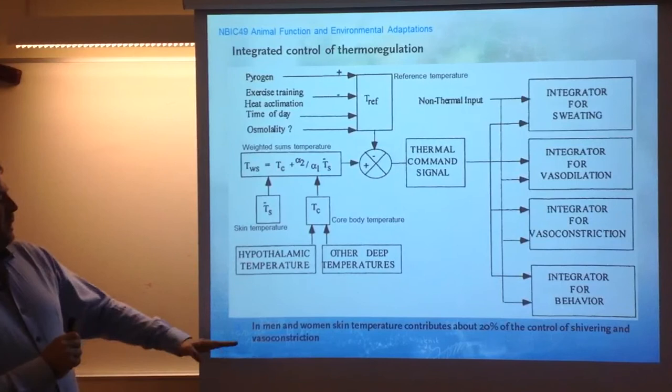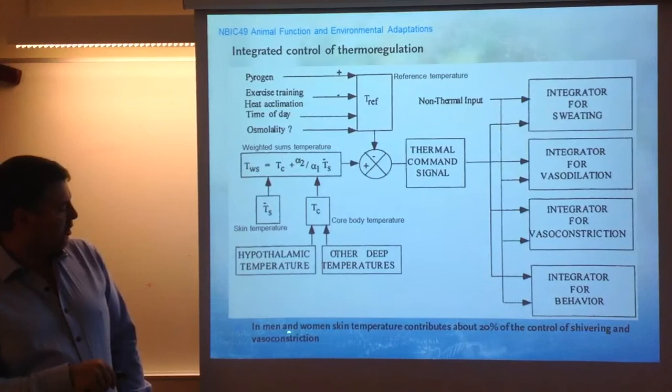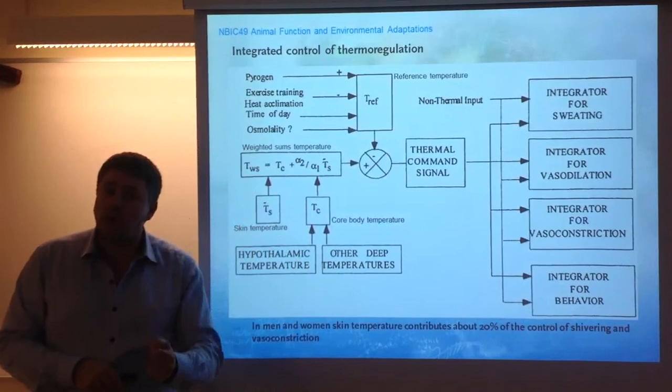In men and women, skin temperature contributes about 20% of the control of shivering and vasoconstriction. This means there is an integration — and this is important, though we don't fully understand how it's happening — between skin temperature and core body temperature.